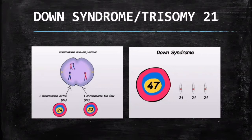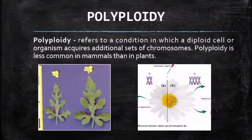It is called trisomy 21 because the non-disjunction occurs on chromosome 21, whereby there is going to be an extra copy of chromosome 21.